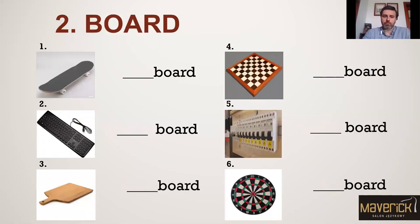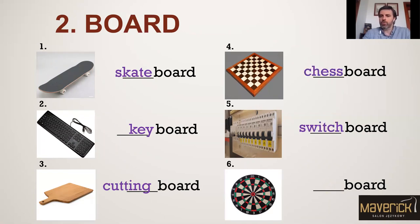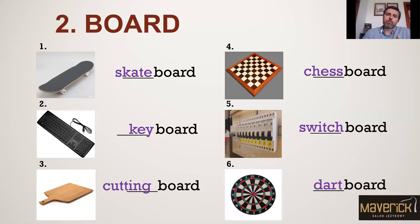Family number two: board. Skateboard, keyboard, cutting board, chessboard, switchboard, dartboard. The very same rule applies. Keyboard — you would be very surprised to get to know these are two different words. One thing that is quite important to highlight is that sometimes these words are spelled as one word, and sometimes as two words, like 'switchboard' or 'cutting board.'